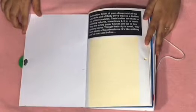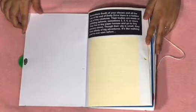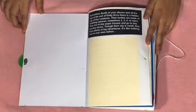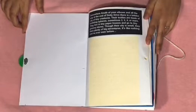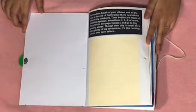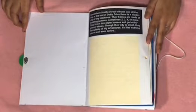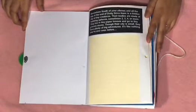Somewhere south of your elbows and all the way at the end of Dottie Drive, there's a hidden city of tiny creatures. Their bodies are made of bobbling spheres, sometimes two, three, four, or more. They live in tiny paper houses and go to tiny grocery stores. Though their city is small, they have plenty of big adventures. It's like nothing you've ever seen before.